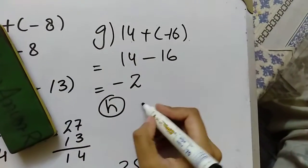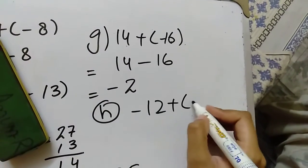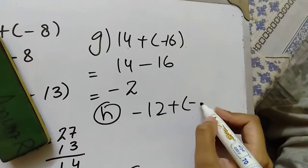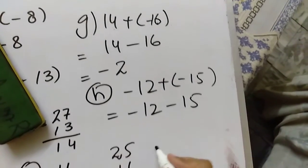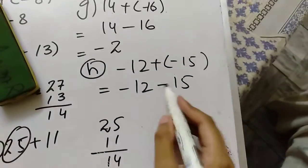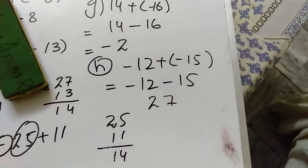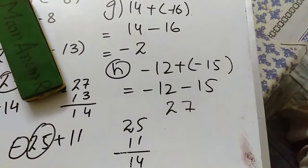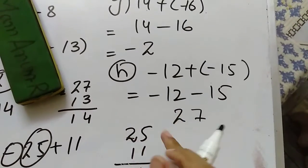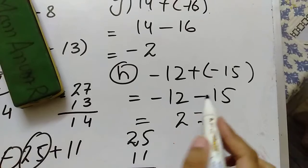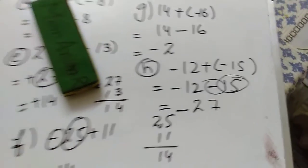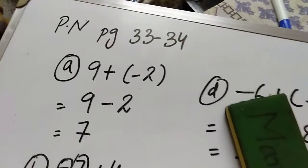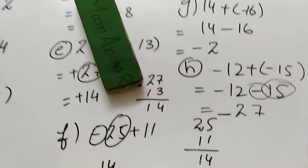H is minus 12 plus minus 14. So minus 12 minus 14, and minus minus is plus, giving 27. The bigger term has the minus sign so it will be minus 27. That's how we solve practice on page number 33 or 34.